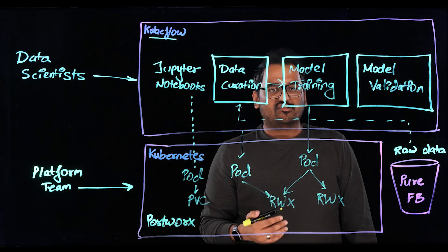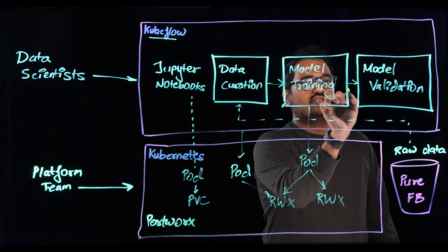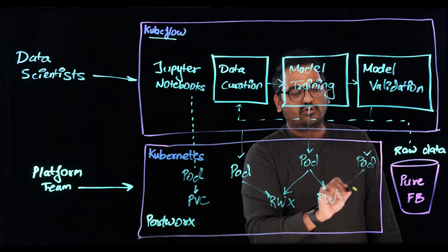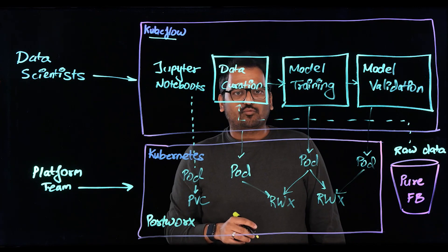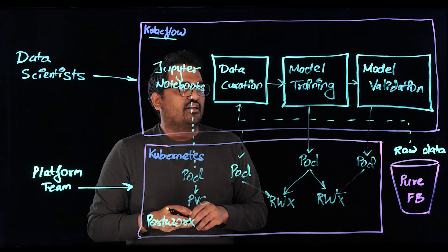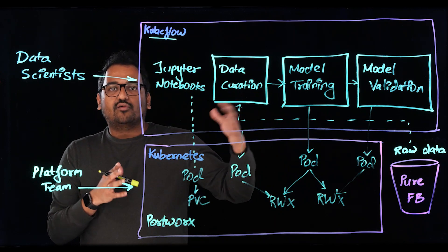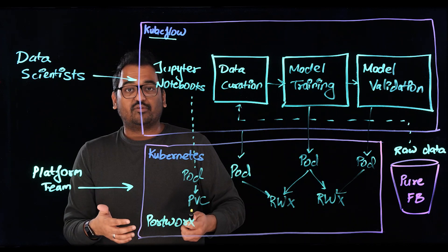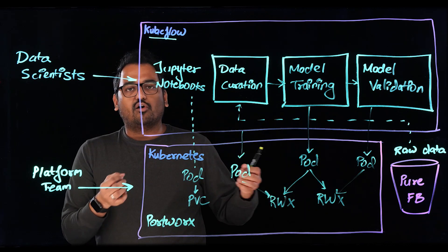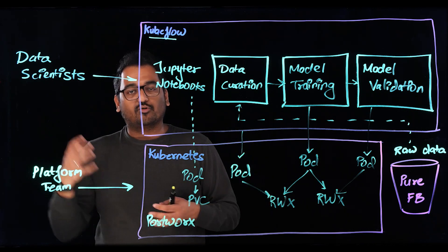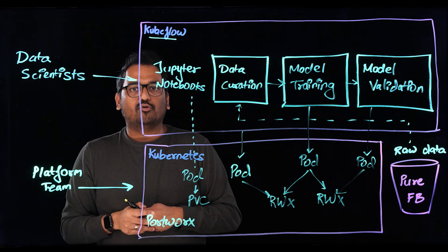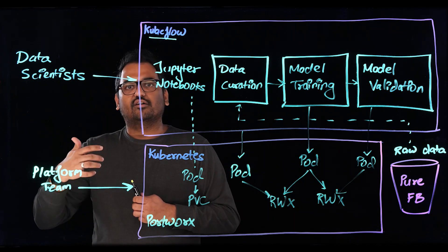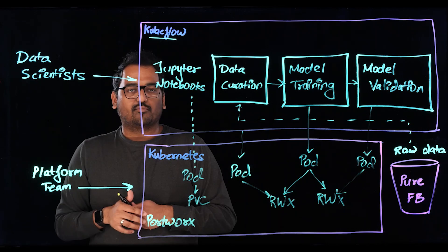And then finally, once my model training is done, I can run my validation. And this again corresponds to a Kubernetes pod, which can access the same volume or it can create a new volume. All of these phases, since they are running on Kubernetes, don't need specific infrastructure resources to be provisioned beforehand before any experiments can be done. Because of all the automation that's built into these open source projects and solutions like Portworx, things become really easy for data scientists and they can accelerate the pace with which they are building out their models.